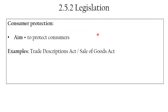We'll start with consumer protection laws. The aim is obviously to protect consumers. Some examples include the Trade Descriptions Act and the Sale of Goods Act. Trade description covers how you describe the product your business is providing — it would affect advertising and what's written on the label, for example the number of calories and ingredients used in food, or the components of a product.